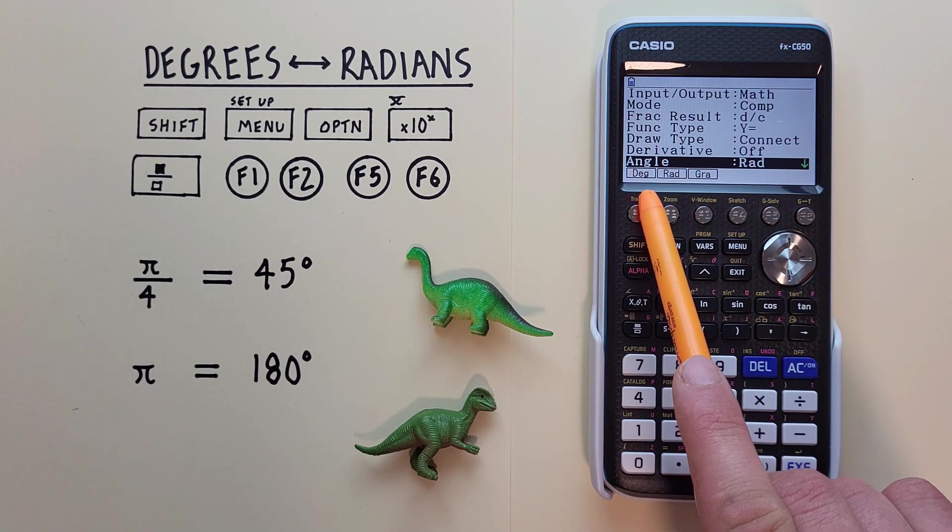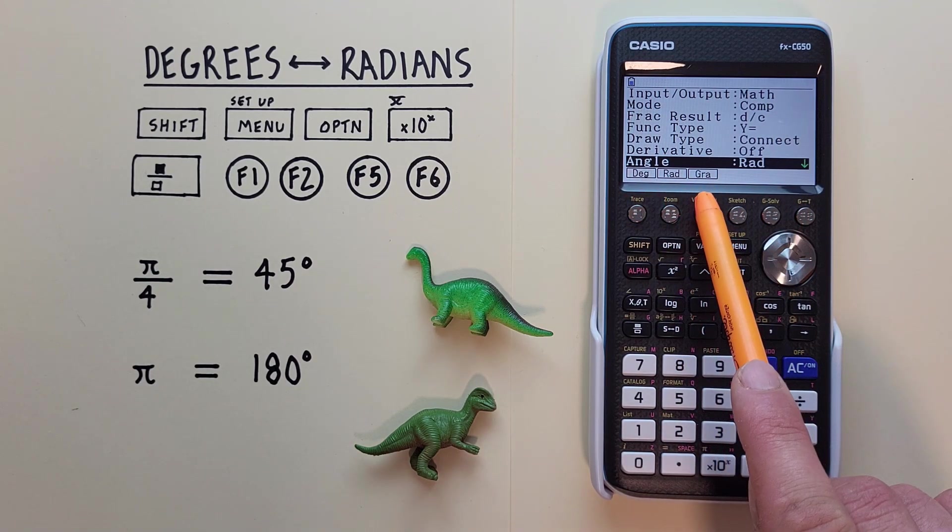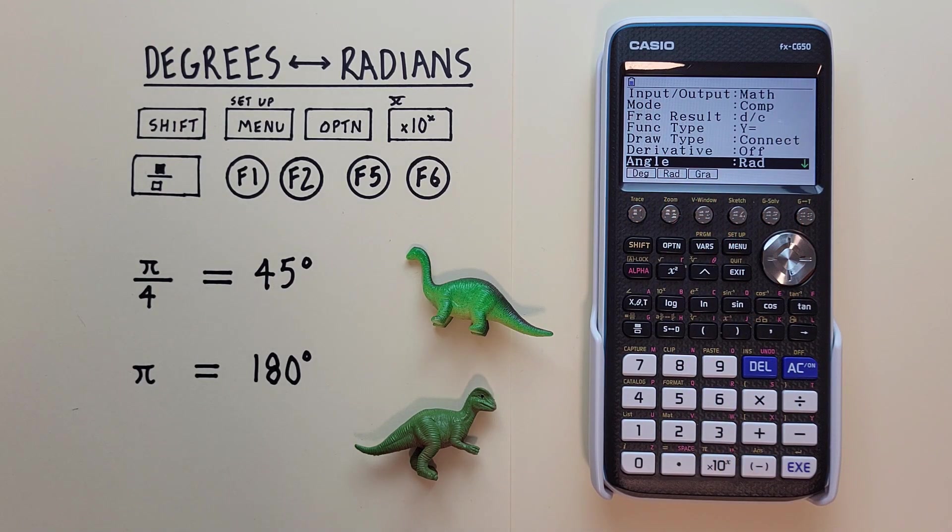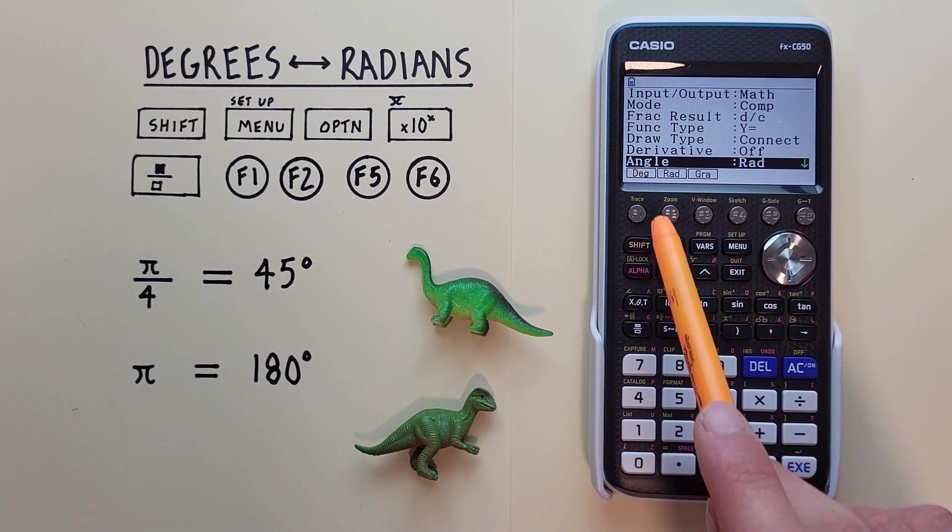Here we can choose between degree, radian, and gradient. We want to choose whichever one we want to get our results in. So if we want to get our results in degrees, we choose DEG here.